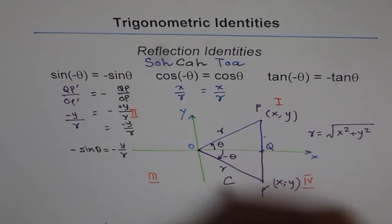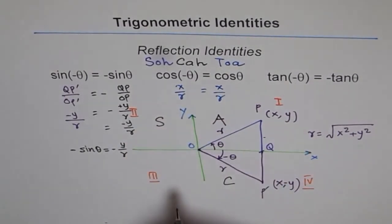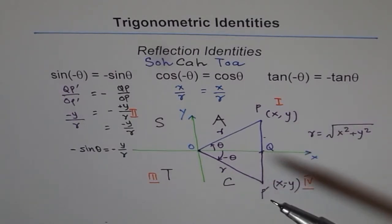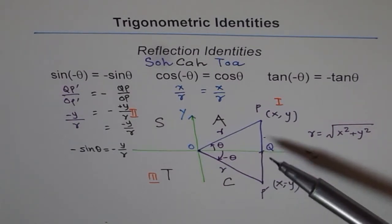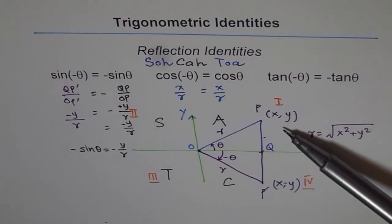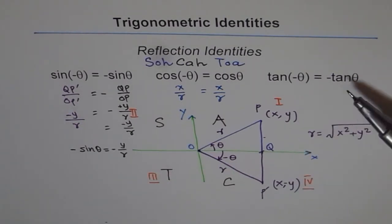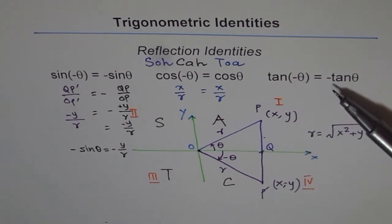What helps you remember this? The CAST rule — C for cosine, A for all, S for sine, T for tangent. Tan of minus theta means you are in quadrant 4, and tan theta is in quadrant 1. Since tan is negative in quadrant 4, we need to take the negative of tan theta to make them equal. So tan(−θ) = −tan θ.